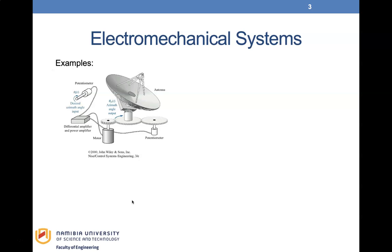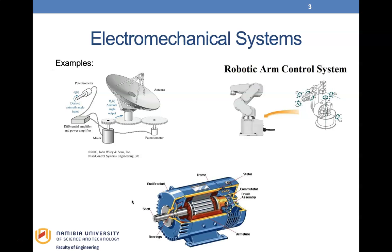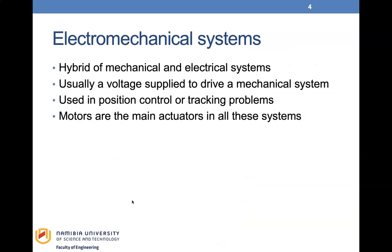Electromechanical systems are in our everyday life — like the antenna, robot arm control systems, and motors. Electromechanical systems are a hybrid of mechanical and electrical systems, usually with a voltage supplied to drive a mechanical system. They are used in position control or tracking problems, and motors are the main actuators in all these systems, so we'll be focusing on how to model the motor.